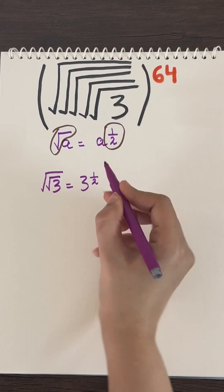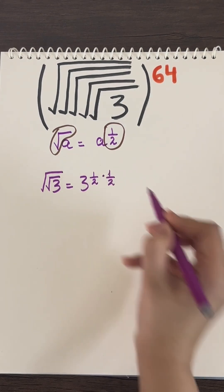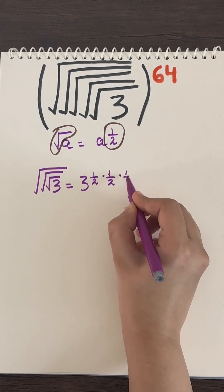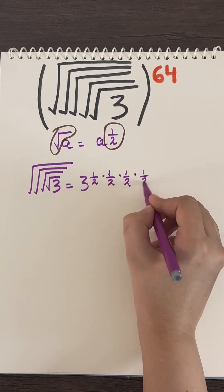If I add another root here, the number will be further halved. If I add another root here, the number will be halved even further. And if I keep adding roots like this, the number will keep getting halved again and again.